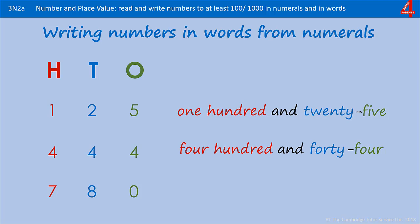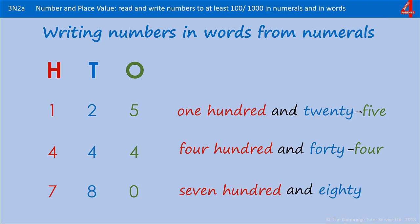Seven hundred and eighty: we have seven hundred, eight tens which is 80, and nothing in the ones, so that stays as seven hundred and eighty.